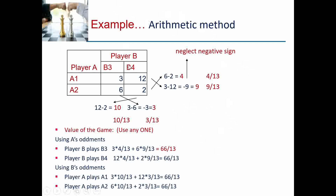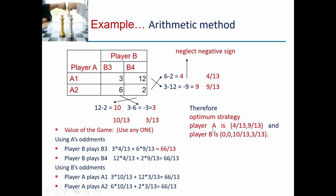Finally, the optimum strategy for player A is: probability of A1 = 4/13 and A2 = 9/13. For player B, the original problem had 4 strategies B1, B2, B3, B4. Since B1 was eliminated by dominance and B2 was eliminated graphically, their probabilities are 0. So player B's strategy is: B1=0, B2=0, B3=10/13, B4=3/13. The value of the game is 66/13. This is how we solve a 2×N matrix using the graphical method.